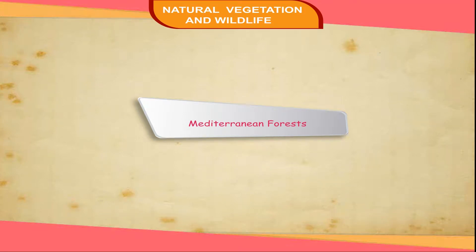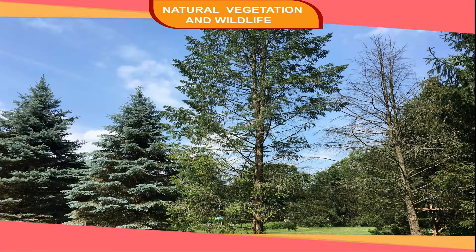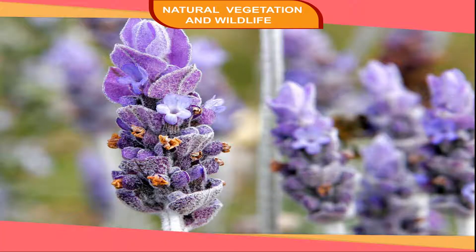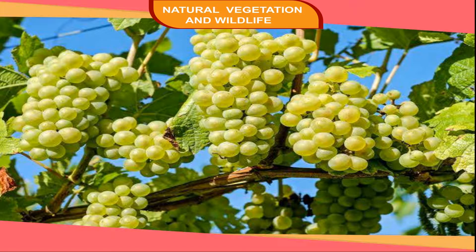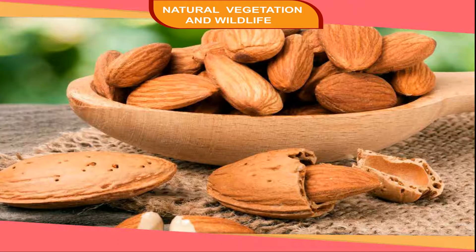Mediterranean Forests. This type of vegetation is found largely in areas around the Mediterranean Sea. This region experiences winter rainfall and dry summers. Plant growth largely takes place in winter, while plants must be protected from the severity of heat during summer. The trees have small leaves and are widely spaced, with deep roots, thick barks, and waxy leaves. The vegetation includes cork, oak, pine, olive, and aromatic plants like lavender and myrtle. Grapes are grown here and fruit cultivation — including plums, peaches, apricot, cherries, and almonds — is carried out on a large scale.